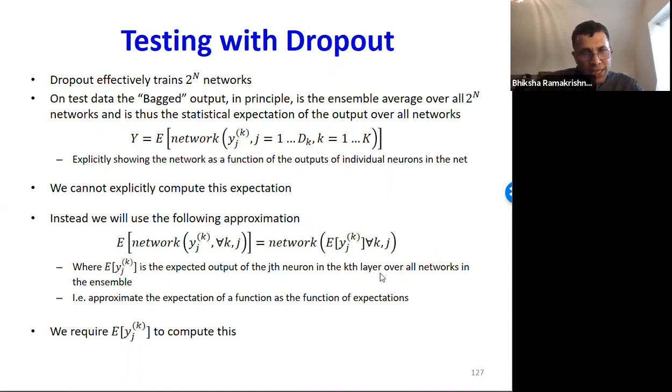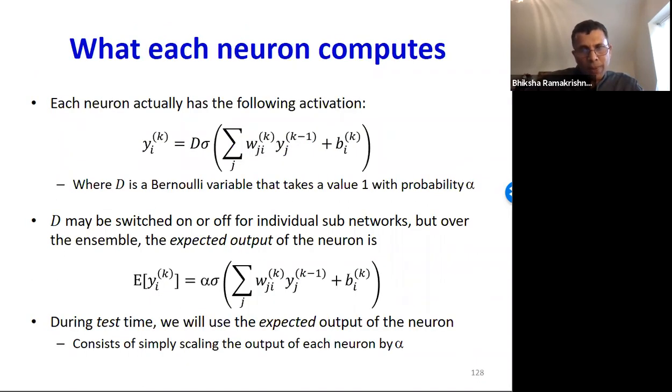Each neuron actually has the following activation. That's d times the activation function applied over its affine input. And d is the Bernoulli variable that decides if the neuron is switched on or off. It has a probability of success alpha. So over the entire ensemble of two raised to n networks, the expected output of the neuron is going to be the expectation of yi, which is the expectation of d times sigma. And the expectation will be simply alpha. So the expected value of the output of any neuron over all two raised to n subnets in the ensemble is simply going to be alpha times the output of the expectation itself.